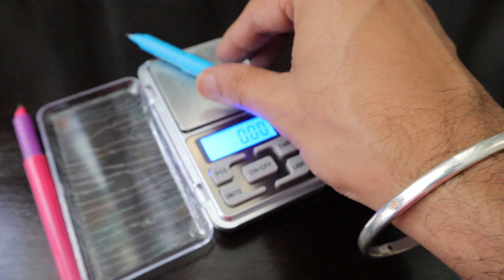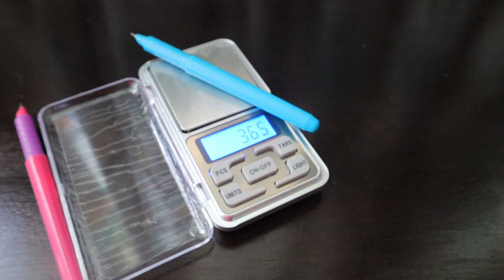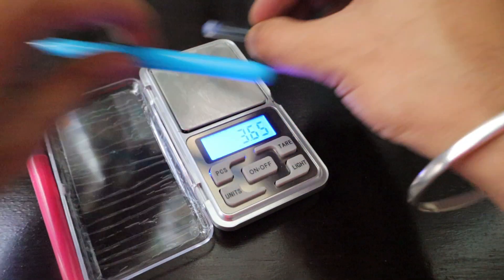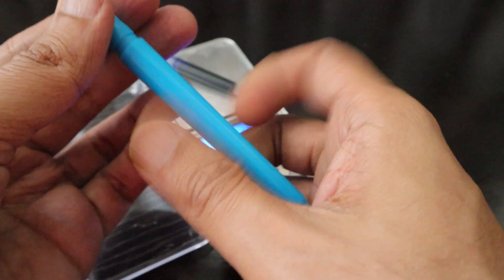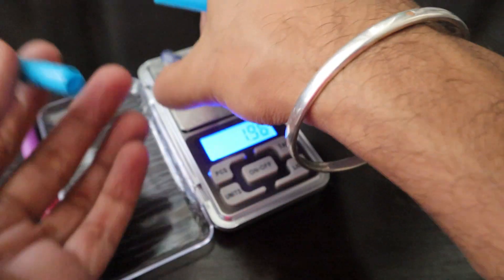If I take out the cartridge, the pen body will be very light, around 3 grams or something of that sort. The pen body is 3.65 grams only because this cartridge is almost 2 grams.